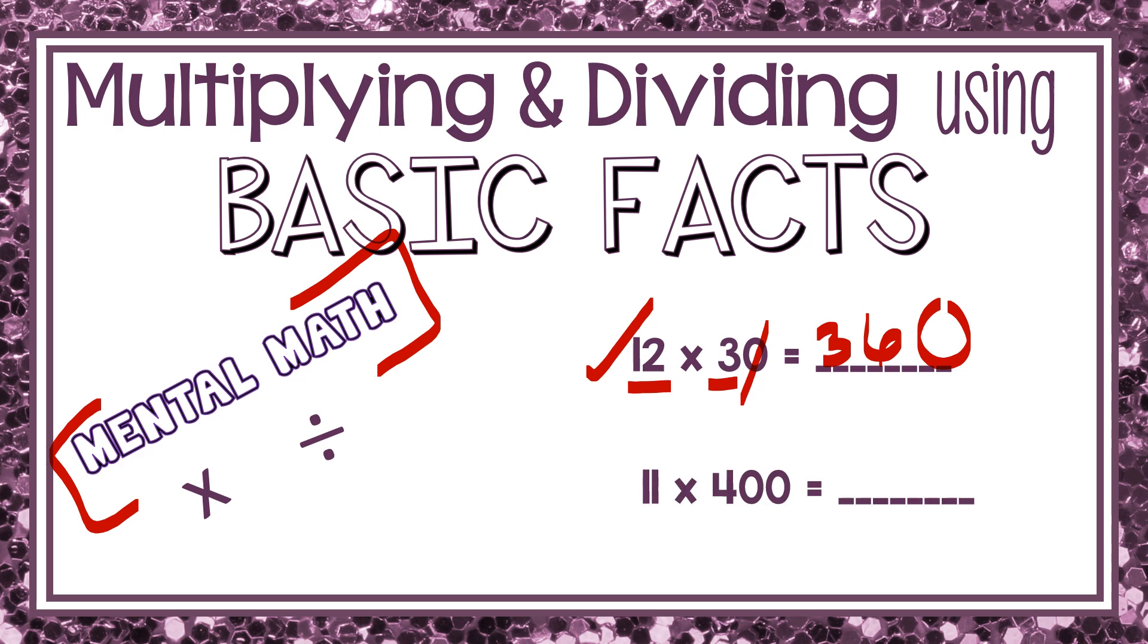Let's look at the next one. 11 times 400. I know that 11 times 4 is 44. And 400 ends in two zeros, so my answer will end in two zeros. And 11 times 400 is 4,400. Those are some very simple ways to use basic facts to solve multiplication problems.